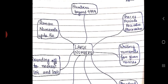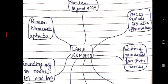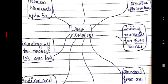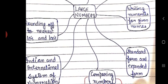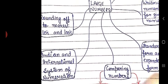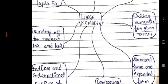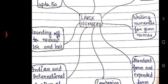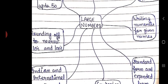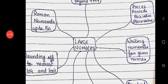The contents are: numbers beyond 9999, places, periods, face value and place value, writing numerals for the given names, standard form and expanded form, comparing numbers, Indian and international system of numeration, rounding off to nearest tens and hundreds, and the last topic is Roman numerals up to 50.